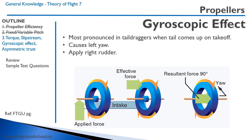Third, in tail-dragger aircraft there is a gyroscopic effect. Remember gyroscopic precession — a force acts 90 degrees out from the applied force. When you're in a tail-dragger, the tail is on the ground, but as you take off and raise the tail up, there is a force on the propeller and the resultant force is 90 degrees out, causing a left yaw. Again, we apply right rudder.